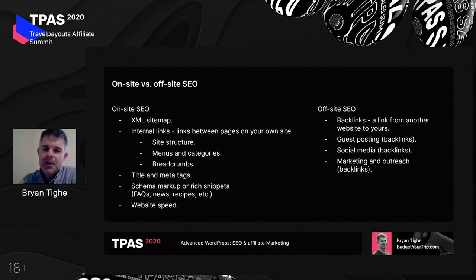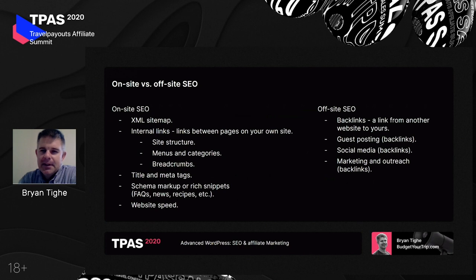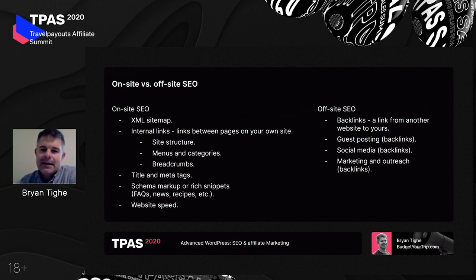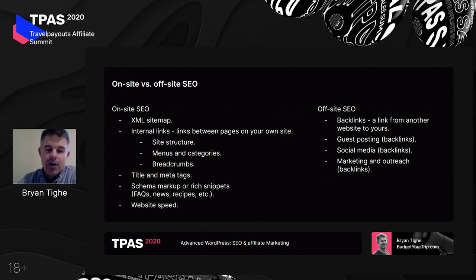Backlinks are very important. Everything you do with off-site SEO essentially revolves around getting more links to your website. When you reach out to other people to get backlinks — through guest posting, or advertising on social media — social media is a way to get traffic on its own. It's debatable whether social media channels like Facebook or Instagram actually give you link juice, but it definitely gets your name out there and maybe somebody else will link to it. Since we're talking about WordPress, everything from now on is about on-site SEO.